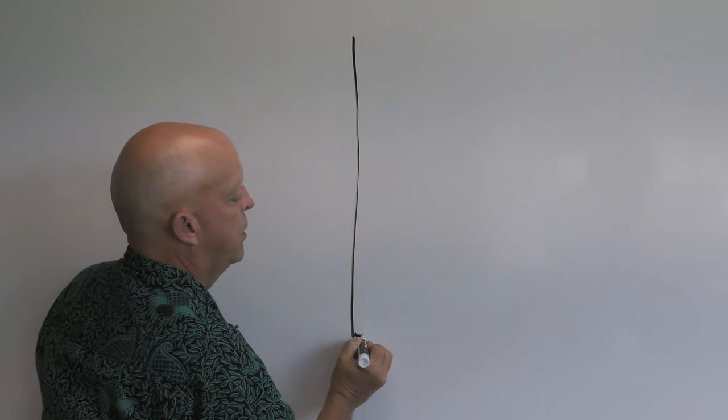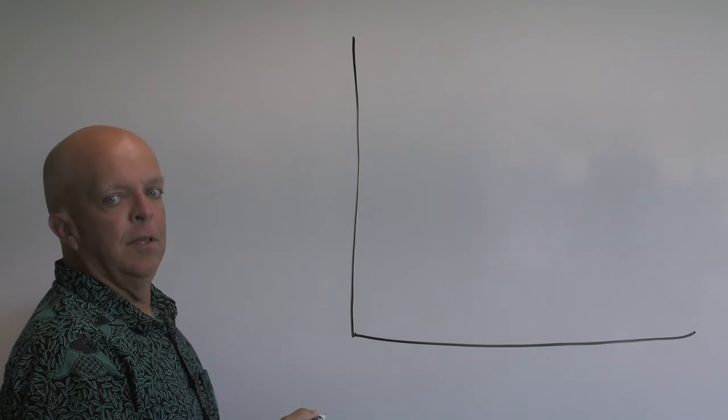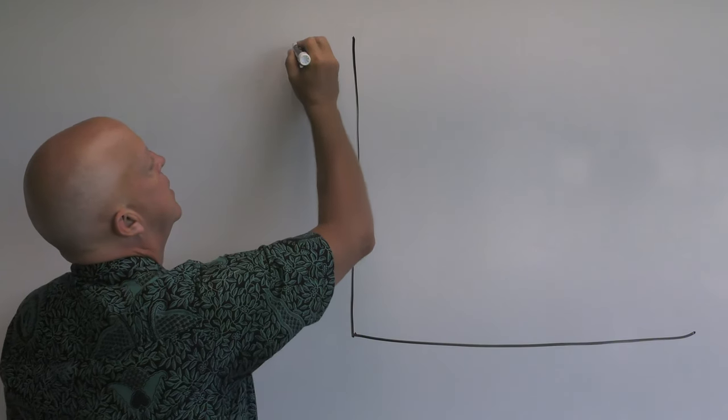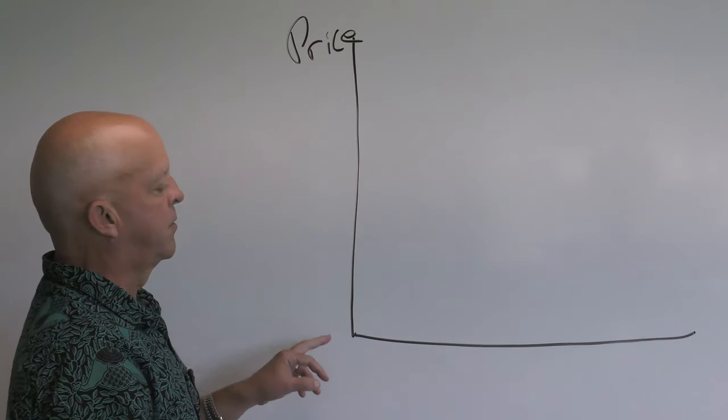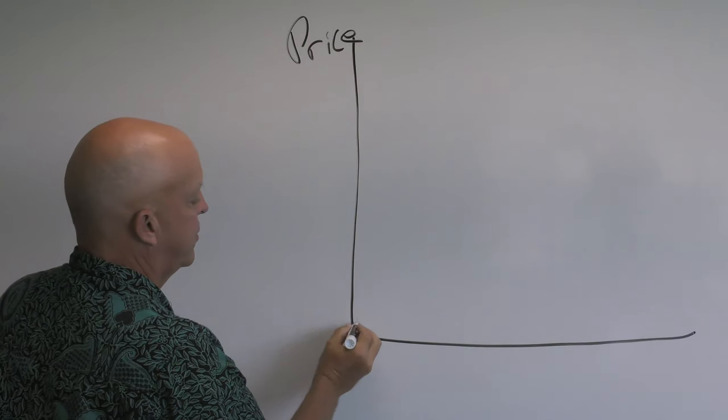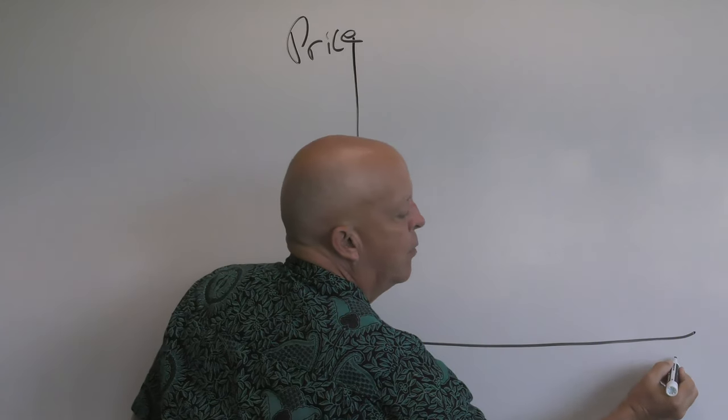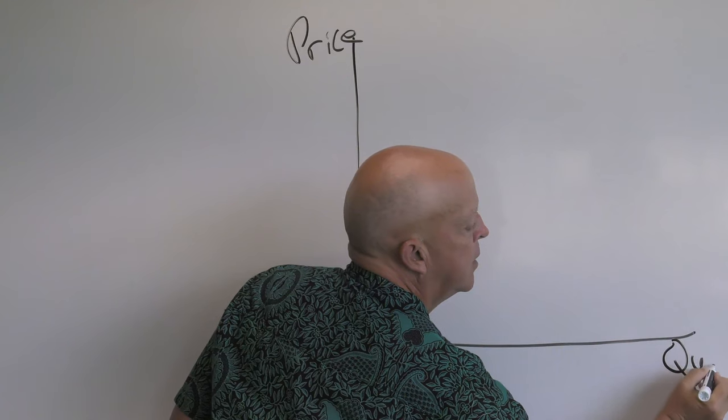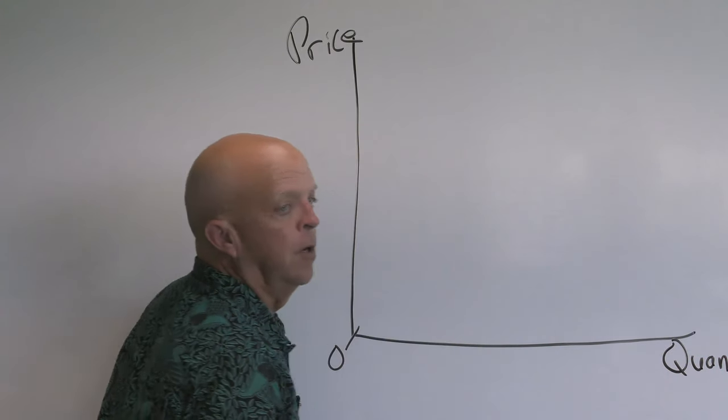When we do a supply and demand, we draw these two lines like this, and these two lines have a label. The label on what we call the vertical axis is called price, and we have a zero right here, and the label for the horizontal axis is called quantity.